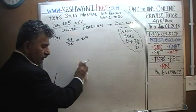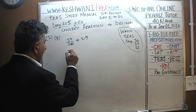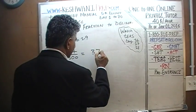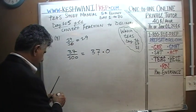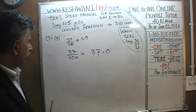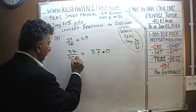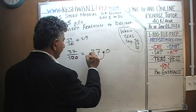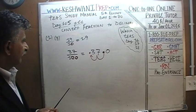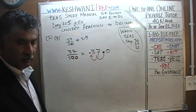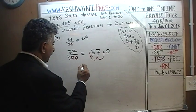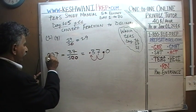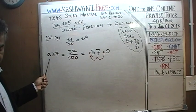What if we had to divide a number by 100? For example, 37 over 100: this has two zeros, so we move the decimal two places to the left and it becomes 0.37. It's always a good idea to put down the leading zero — writing it as 0.37 rather than just .37.